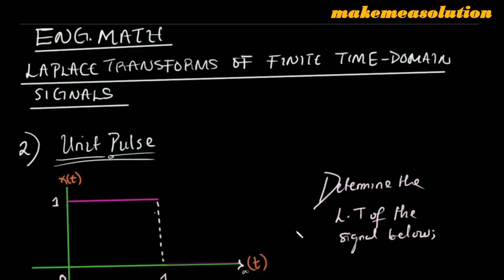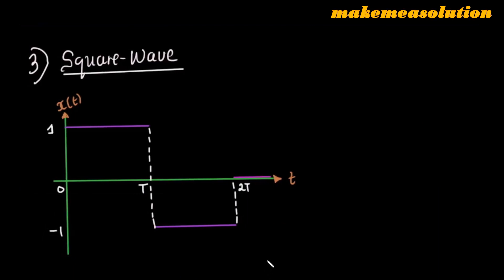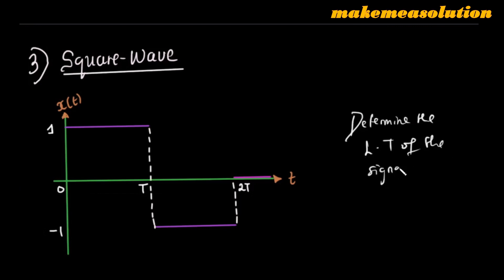Hello guys and welcome to today's class. In the last class we discussed the Laplace transform of the unit pulse signal, which is a type of square wave. In today's class we are going to identify the real square wave itself — we're going to determine the Laplace transform of the signal shown below.